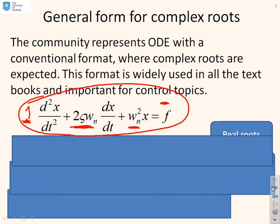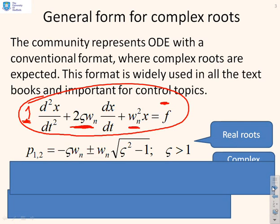If this ζ variable is bigger than one, the roots of the characteristic equation are -ζωₙ ± ωₙ√(ζ²-1). The key thing is what's inside the square root. If ζ squared is greater than one you get the square root of a positive number and therefore you get real roots.